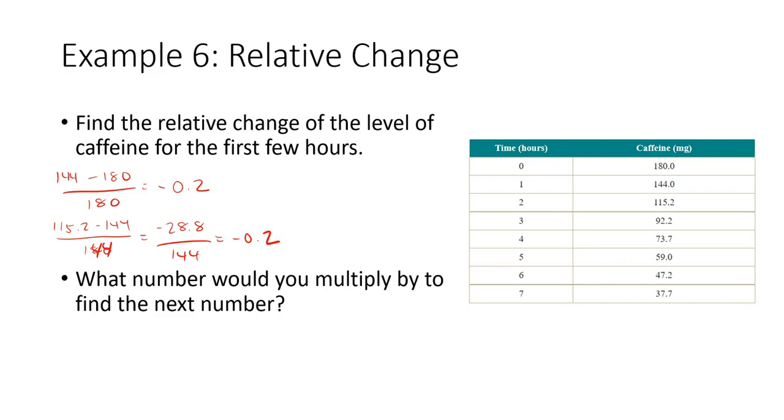So exponential decay in the relative change works just a little bit differently. Each time this value is going down by 20%, which means we have 80% of the previous value, which means if we take 180 and multiply by 0.8, we should get 144. And then if we multiply 144 times 0.8, we should get 115.2. If we multiply that times 0.8, we get 92.16 or 92.2.